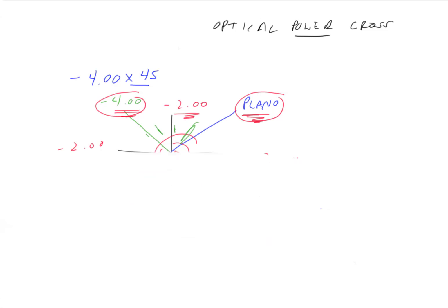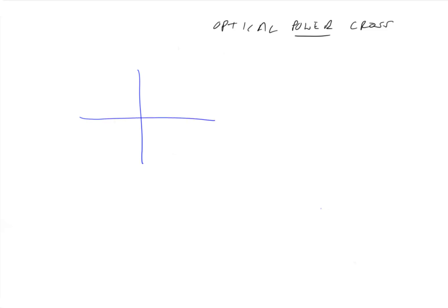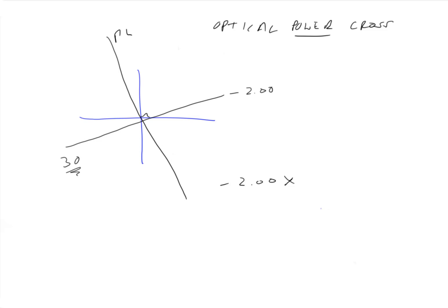Let's look at one more, and then in the next video we will do practice problems. Let's say along the 30 degree meridian is minus 2, and here's a right angle — so what is the power of this cylindrical lens? We know it's a cylindrical lens and the power is going to be minus 2, and plano here. We define it by where its axis is. We know the axis isn't 30 because that's where the power is. To figure out the axis, we go 90 degrees away from 30: 30 plus 90 is 120. So minus 2 axis 120 is how you would write this lens.